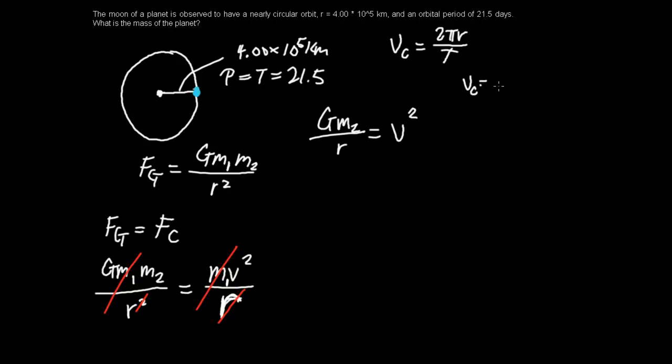So we know r is 4.0 times 10 to the 5th kilometers, and t is 21.5 days. Alright, so v equals, well, let's make it over here. Vc equals 2π times 4 times 10 to the 8th.